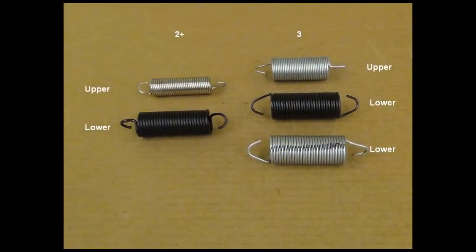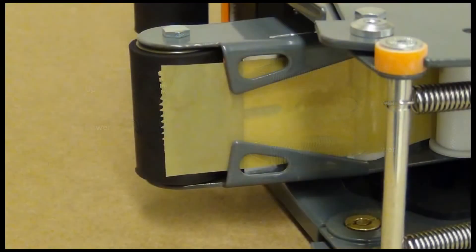You should be aware that the upper and lower springs are different. The upper springs have lower tension because gravity aids the mechanism. The lower springs have higher tension because the mechanism works against gravity. To differentiate between the two, the upper springs are silver in color and the lower springs are black or have a colored stripe.